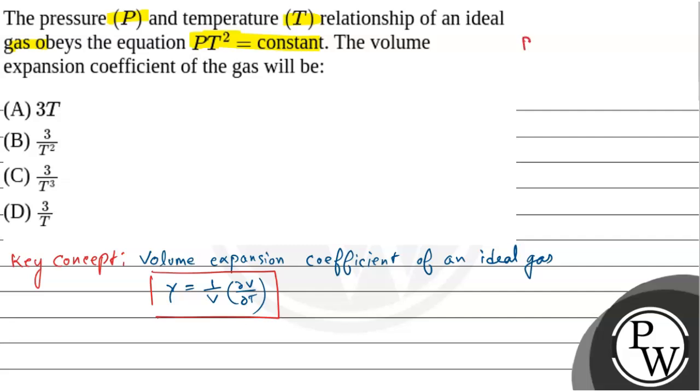In the question, PT² equals constant. Since this is an ideal gas, ideal gas follows PV equals nRT. So P is nRT by V.